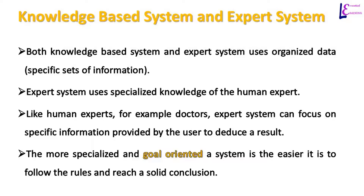Therefore, the more specialized and goal-oriented a system is, the easier it is to follow the rules and reach a solid conclusion. In simple terms, a user interface is the screen or point where we connect or interact with the system. In expert systems, it is the point where a user interacts with the system — users ask specific questions here or follow specific processes so that the expert system can answer or produce a solution.